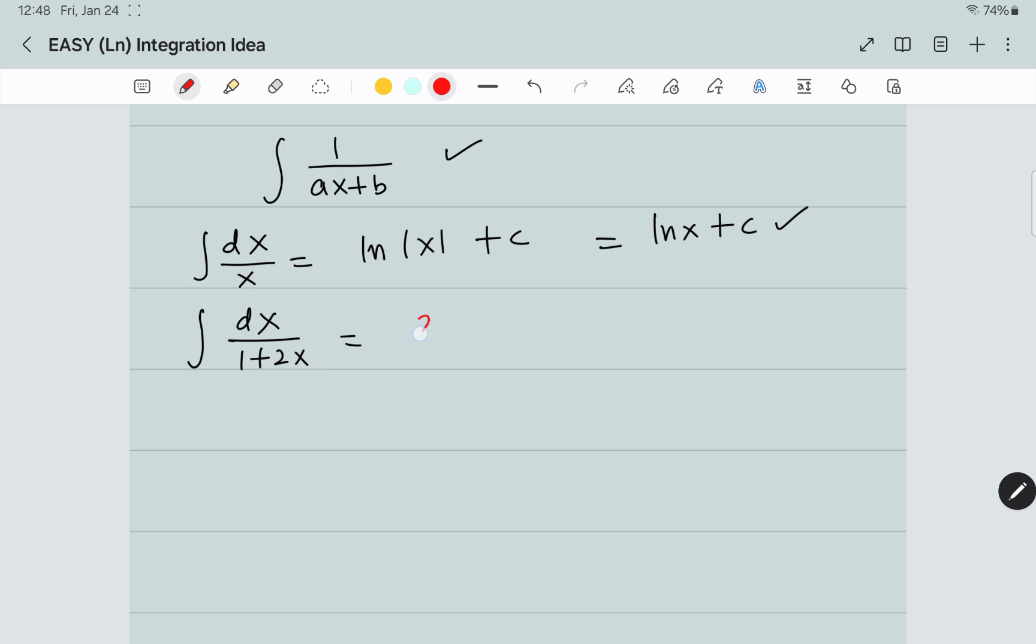I am going to adjust this 2 and multiply. At the same time, I am going to divide by 2. So now it is 2 dx divided by 1 plus 2x.